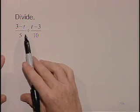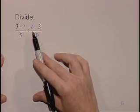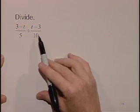Let's divide. 3 minus t divided by 5, divided by the fraction t minus 3 over 10.